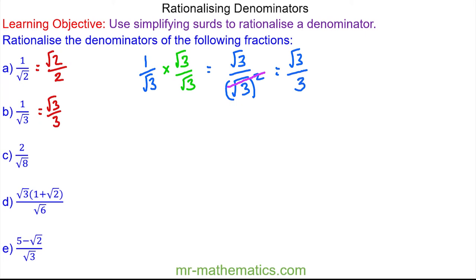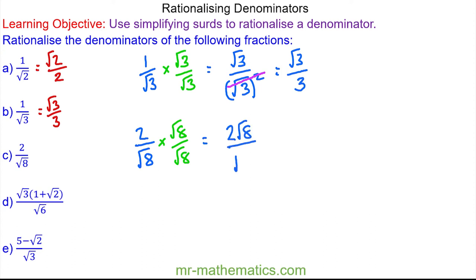Do you want to try and rationalise the denominator in question c and simplify the result? You can pause the video and resume it when you are ready. For question c we have 2 over the square root of 8. We'll rationalise the denominator by multiplying the numerator and denominator by root 8. For our numerator we now have 2 root 8, and in the denominator we have root 8 squared. We know these will cancel, so we are left with 2 root 8 over 8.